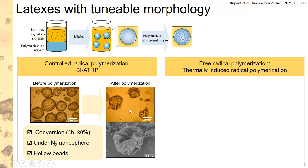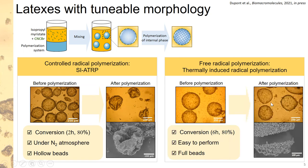For the ATRP system, within two hours we obtained very good monomer conversion of about 80%, and a hollow bead morphology, showing that we effectively grew polymer from the surface of the emulsion, leaving an inner void inside the capsule. However, this reaction must be performed under a nitrogen atmosphere, making it quite tricky. We therefore preferred free radical polymerization, which produced full beads — as seen by SEM — with a similar conversion achieved in only six hours, making it a reasonable and simpler approach.